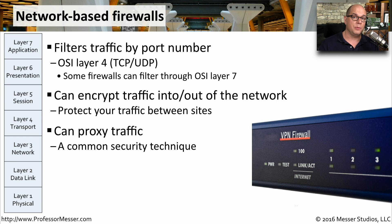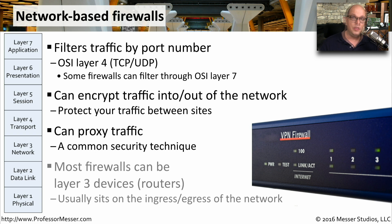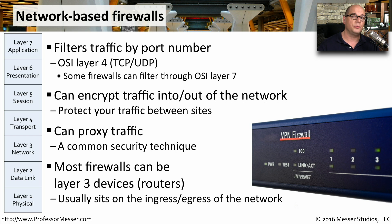It's also common to see these network-based firewalls use a proxy function. You would make queries to the firewall, the firewall would continue the query out to the internet, receive the response, examine it, and if everything looked OK, provide you with the answer. You'll also find that most firewalls are Layer 3 devices, which means they're routers. This means we're able to put a firewall on the edge of our network and also use it to route traffic into and out of our environment.